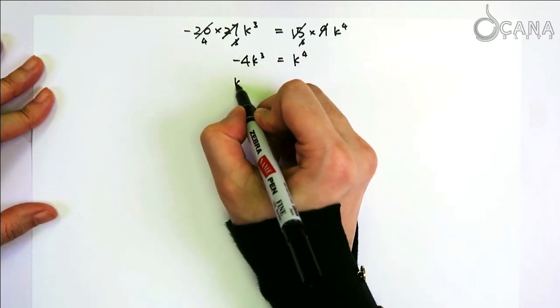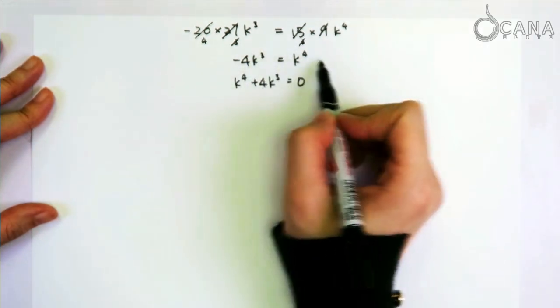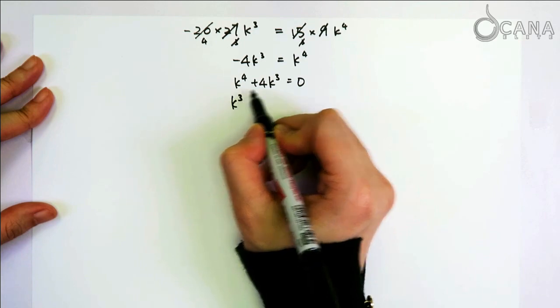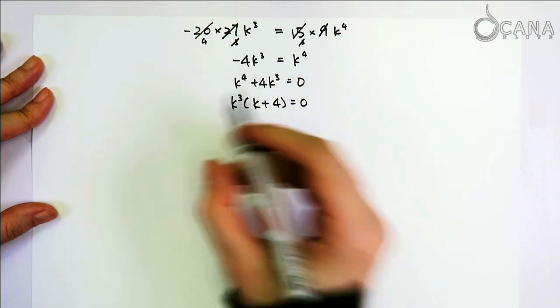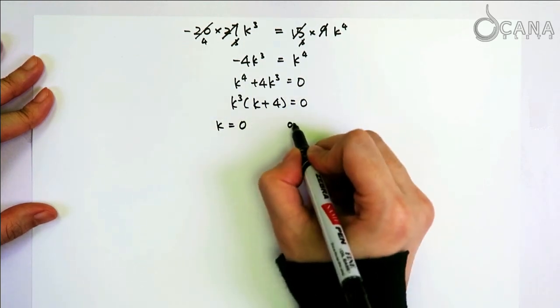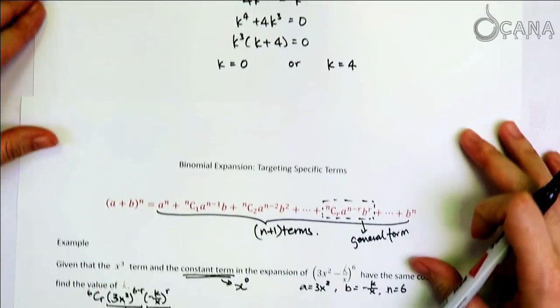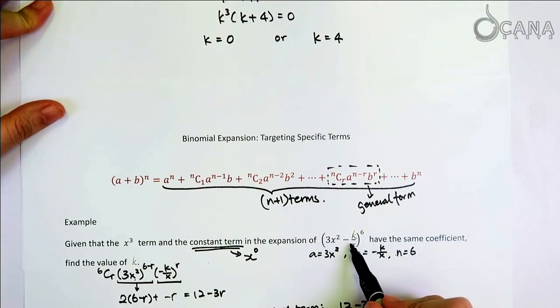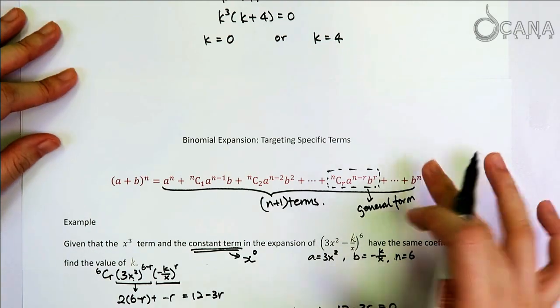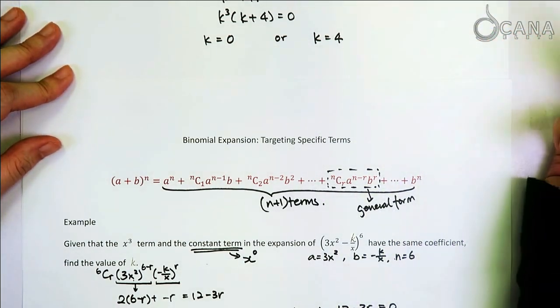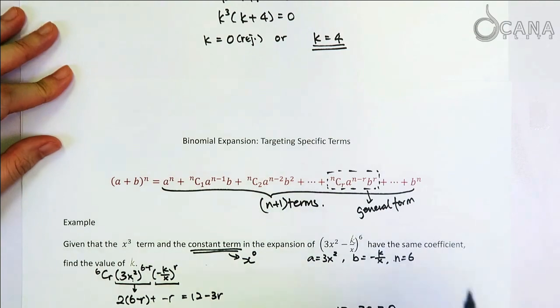By taking this term to the other side, and we can factorize the common factor k cubed from this. And it's very easy to get that k is either 0 or 4. But looking back at the question, if k equals to 0, then there's no point to work on this binomial expansion at all, right? So for this question to make sense, k cannot be 0. So we can just reject the solution and just take that k should be 4.